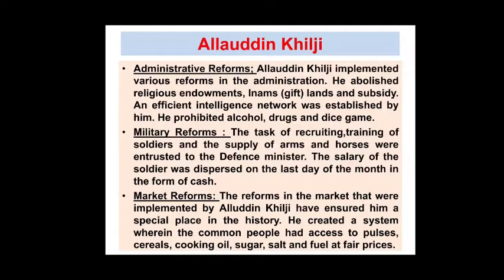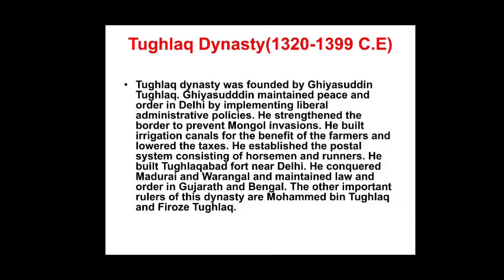Alauddin Khilji also implemented market reforms that ensured him a special place in history. He created a system wherein common people had access to pulses, cereals, cooking oil, sugar, salt, and fuel at fair prices. He fixed prices — not too high, not too low. He appointed higher officials named Shahna-i-Mandi to regulate the markets, and severe punishments were given to anyone who cheated in the market.